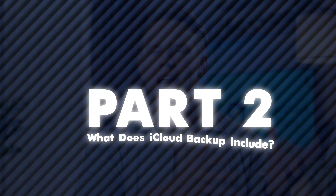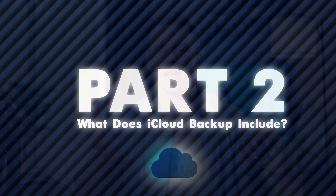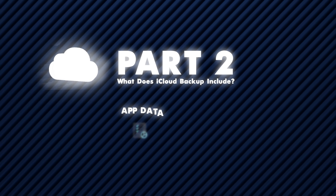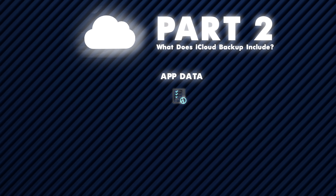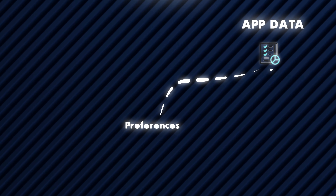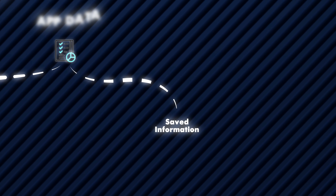Part two: What does iCloud Backup include? It is very important to understand what data is being secured when you back up to iCloud. An iCloud Backup is designed to store the most critical data from your iPhone, ensuring you can recover it quickly whenever you need it. Here's a closer look at what's included. First up, we have app data — this includes data for apps installed on your device, such as preferences and saved information.